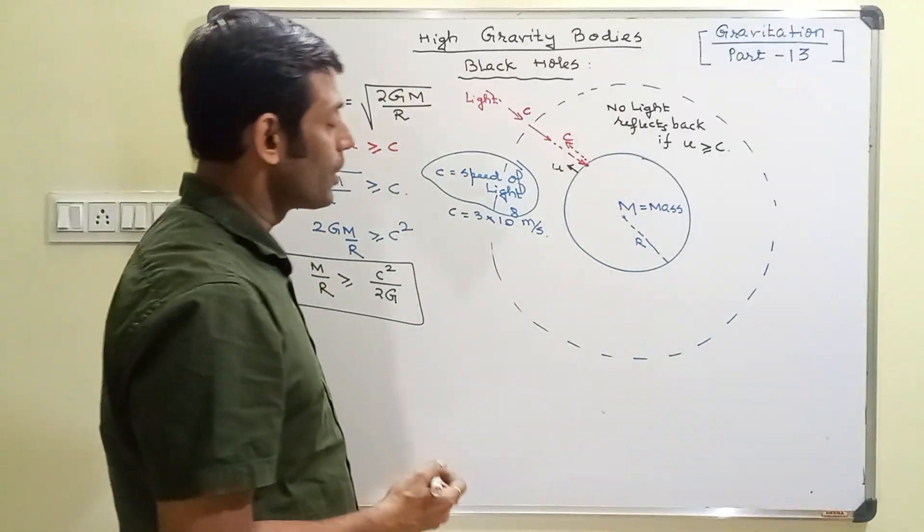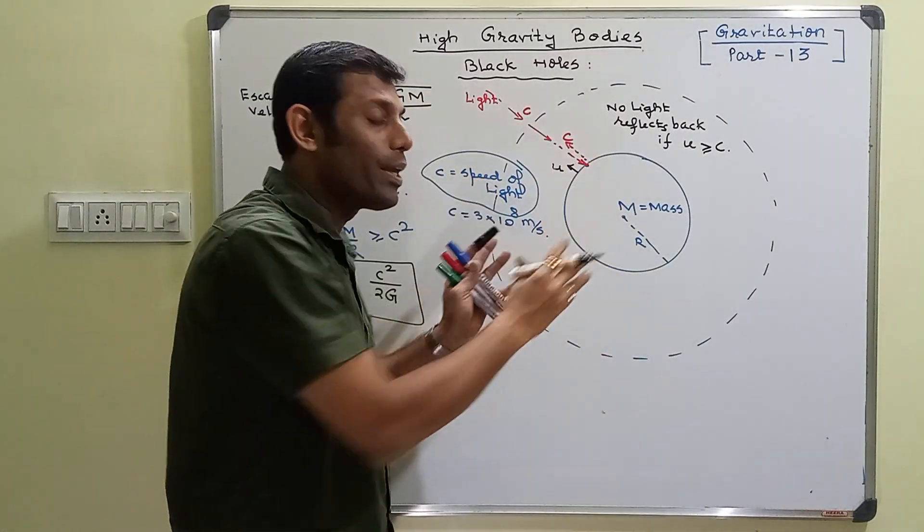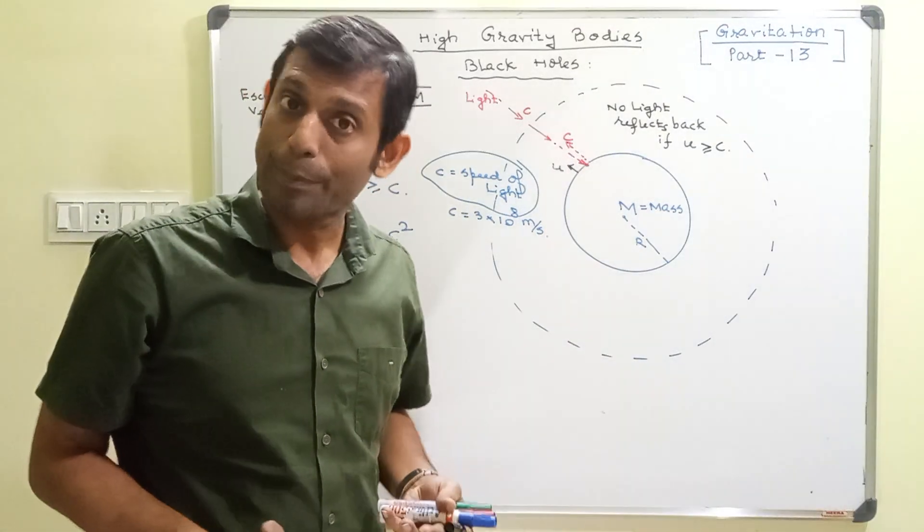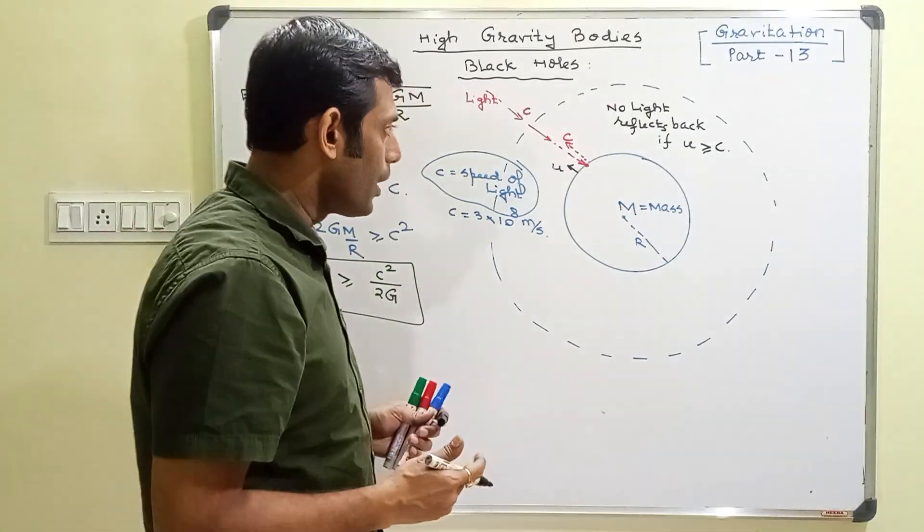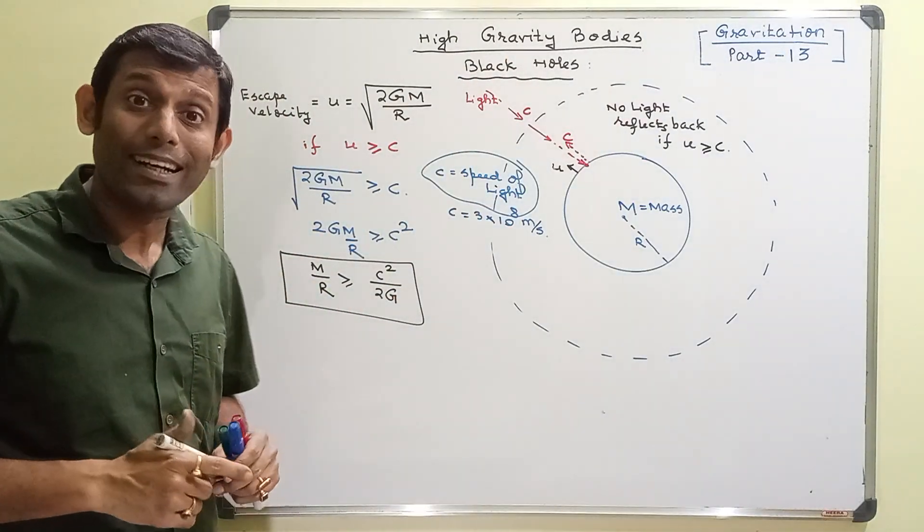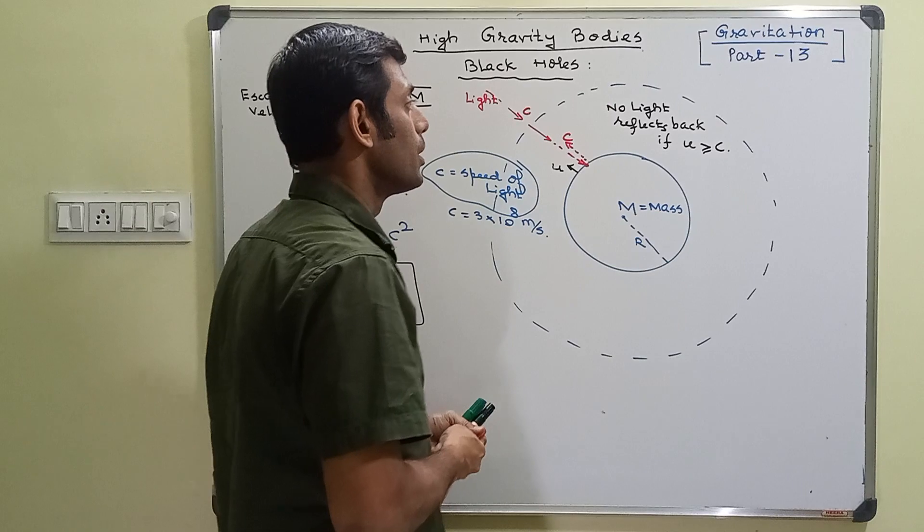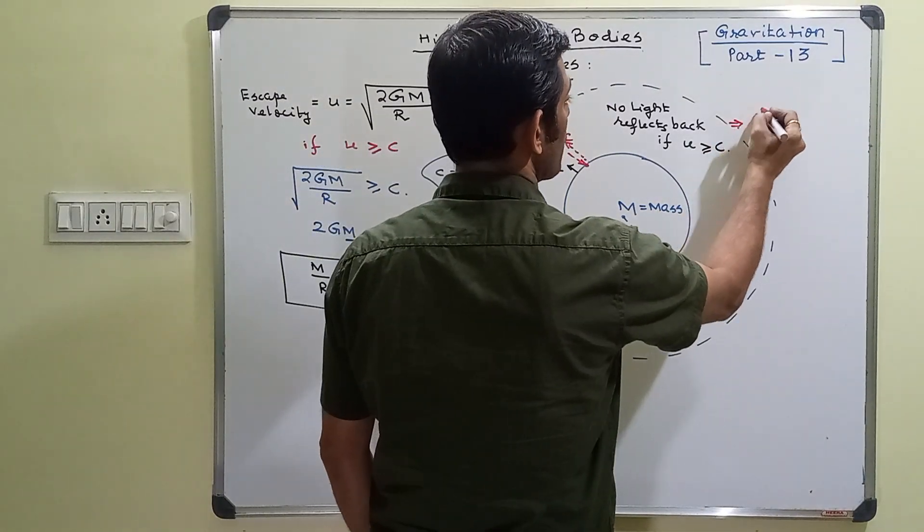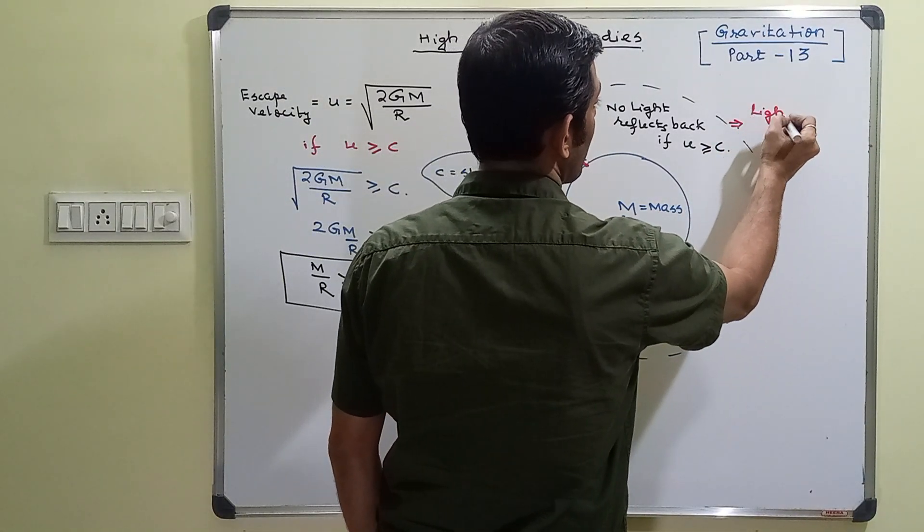That means even if this body has mass, has matter, and light falls on this from several sides, that light just disappears. This implies incident light.